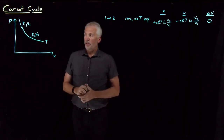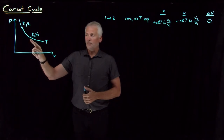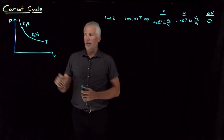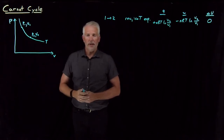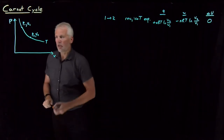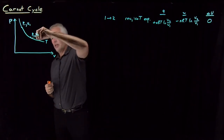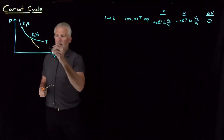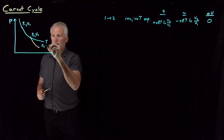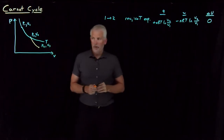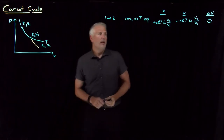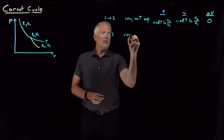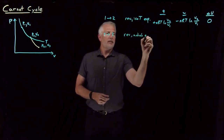Next, after we've expanded the gas to P2 and V2 — still on this isotherm — we're going to expand it a little more. But now instead of expanding isothermally, instead of remaining on this isotherm, we're going to expand adiabatically. That curve is going to look something like this, expanding to some new P3, V3. Going from step two to step three is a reversible and adiabatic expansion.